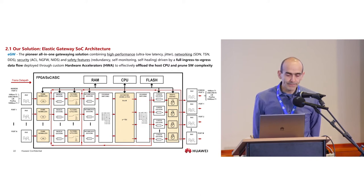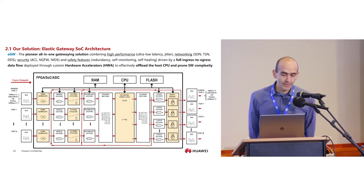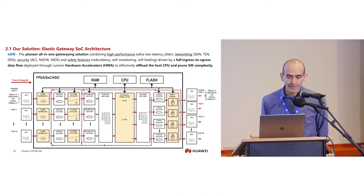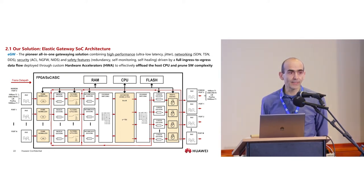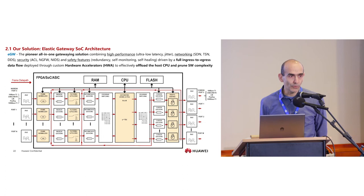An important point to note is the loopbacks. At the output of the gateway and the traffic shaper, loopbacks allow frames to be recirculated back to the filtering and policing stage or the gateway again. This is necessary because part of the functionality required in a zonal gateway demands this kind of recirculation.